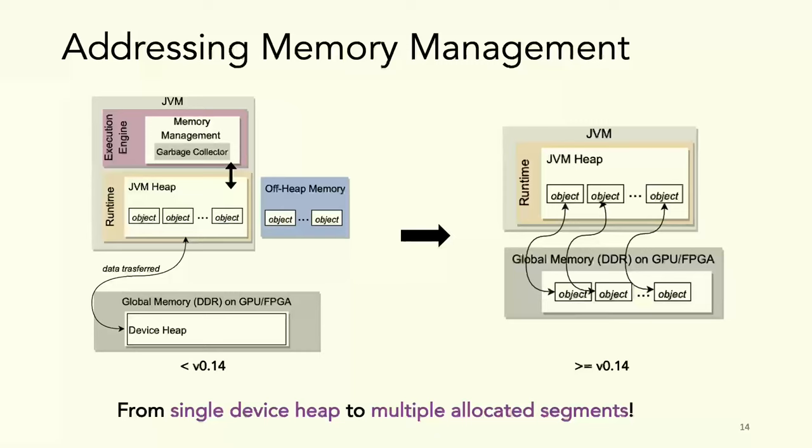This also enabled us to overcome a limitation. In OpenCL, the maximum allocation is one fourth of the total memory capacity on the GPU. By allocating different segments per input size, we have freedom to allocate more space for the input.